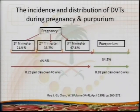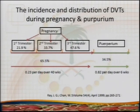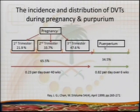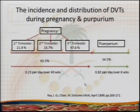An interesting question: is antepartum and postpartum thrombosis risk the same? I believe they are different. For DVT, 65% of cases are diagnosed during pregnancy and 35% in the puerperium. However, since the postpartum period is only six weeks versus 40 weeks of pregnancy, the daily risk in the postpartum period is 0.82 per day versus 0.23 during pregnancy. This explains why the postpartum period is more risky for thrombosis. The DVT risk is distributed across trimesters but is highest in the third trimester.